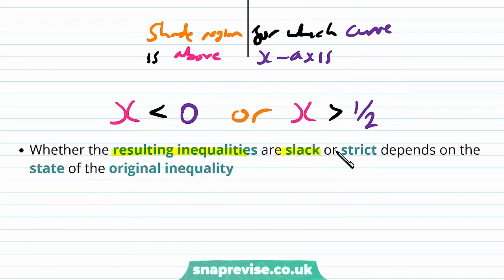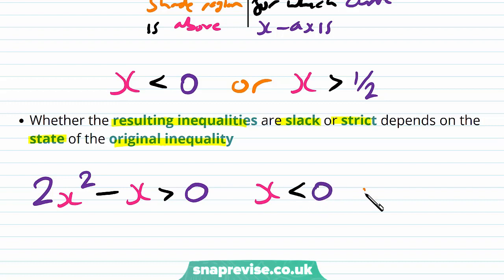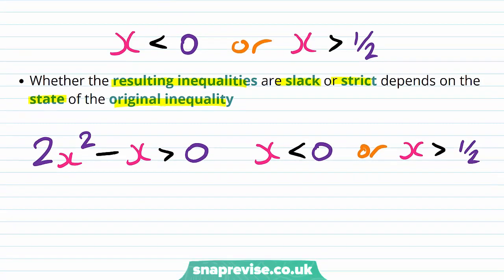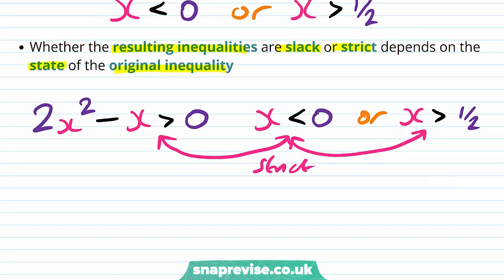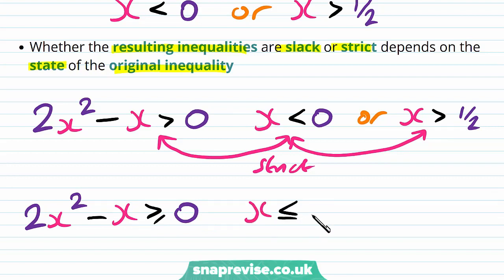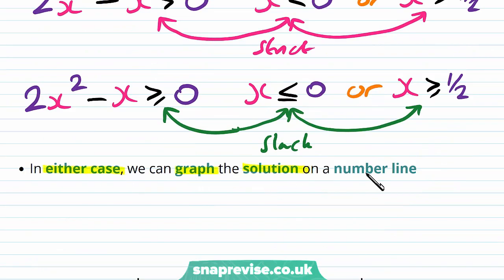Whether the resulting inequalities are slack or strict depends on the original inequality. We have 2x² - x > 0, solved by x < 0 or x > ½ — all strict. If instead the inequality were 2x² - x ≥ 0, then the answer would be x ≤ 0 or x ≥ ½, because the original inequality is slack. In either case, we can graph the solution on a number line.